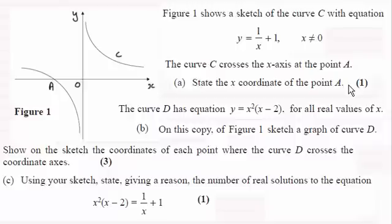Well, when any curve crosses the x-axis its y-coordinate will be 0. So if y is equal to 0, 1 over x must equal minus 1, and that means that x must be equal to minus 1. So the x-coordinate of point A is minus 1. I'll just put it in here.